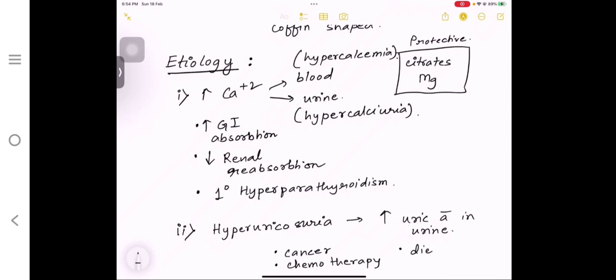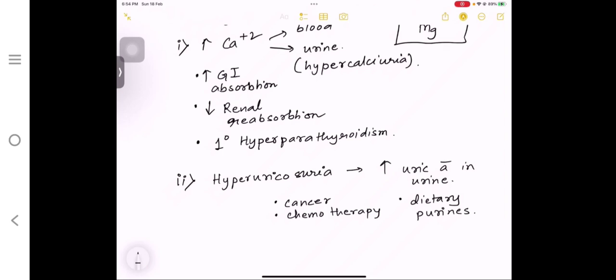Third, if there is hyperoxaluria—oxalic acid is increased. This can happen when there is increased dietary intake of oxalic acid or when there is increased enteric absorption from the gut.